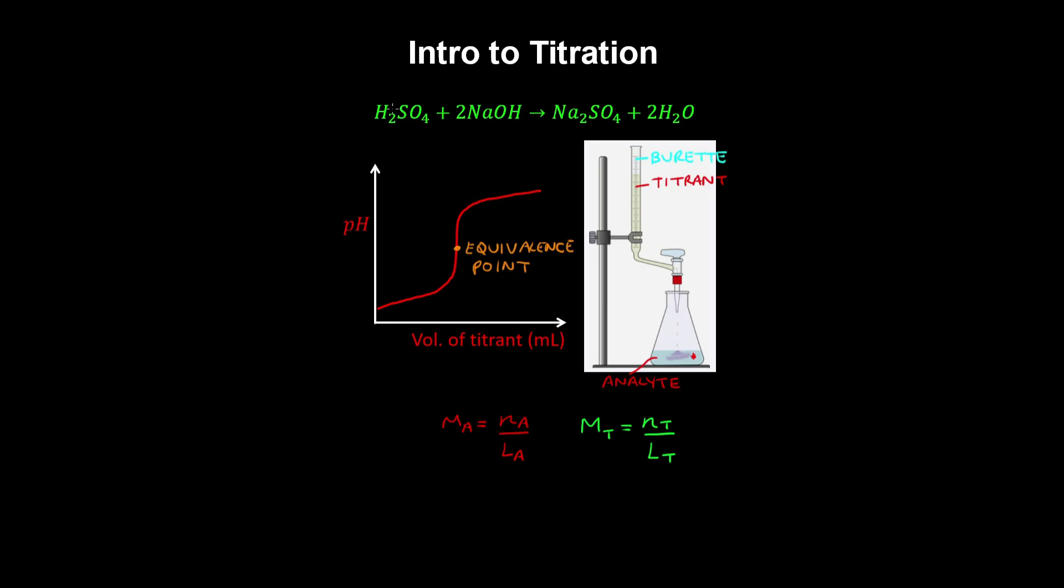For example, when sulfuric acid which is a strong acid and the analyte is neutralized by a strong base, sodium hydroxide which is the titrant, it becomes neutral when the pH is 7.